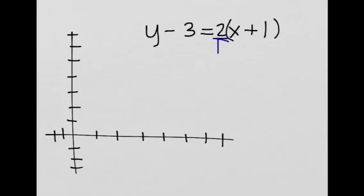We have a good amount of information just from this equation. We know that the slope is 2, and we know that the point on the graph is negative 1, 3.